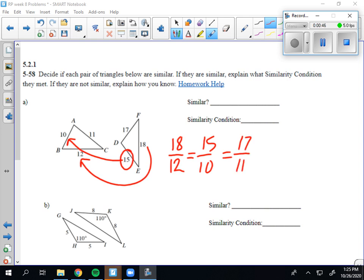So 18 over 12 is 1.5, 15 over 10 is 1.5, and 17 over 11. This is true. This is not.